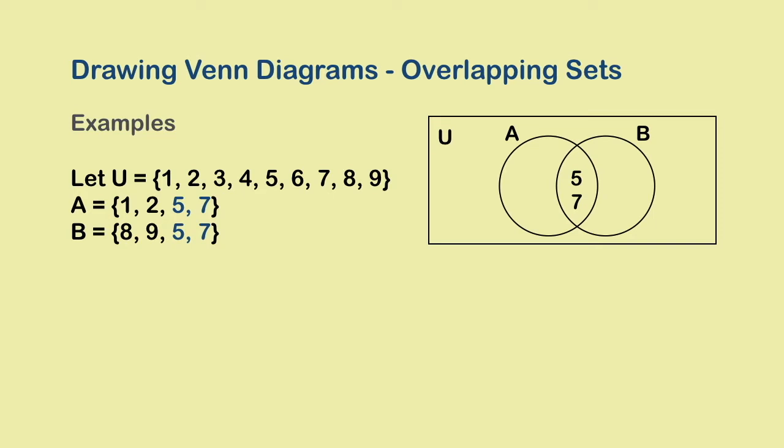Then we see what is still missing from A and we put that in the outer region of A. So 1 and 2 go there. We do the same thing with B, and so we put 8 and 9 in the relevant region.